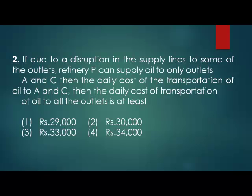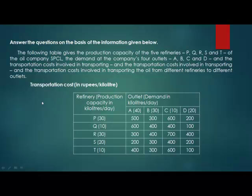Let's move on to the second question. If due to a disruption in the supply lines to some of the outlets, refinery P can supply oil to only outlets A and C, then the daily cost of oil to all the outlets is at least how much? So now P can supply only to A and C. Let's get back to the table and keep the cost minimum.